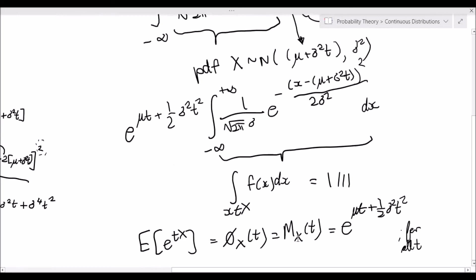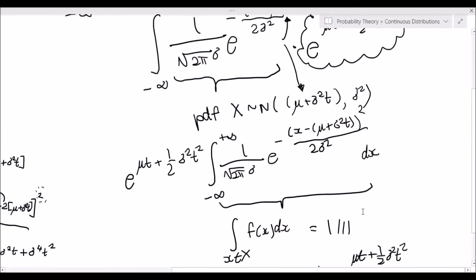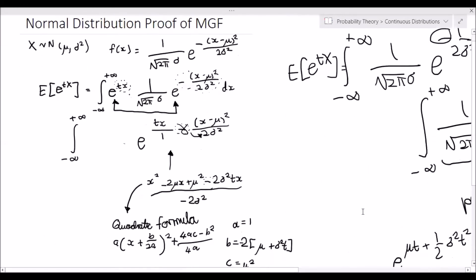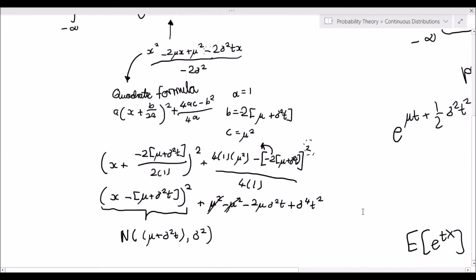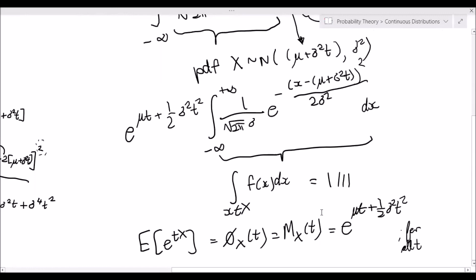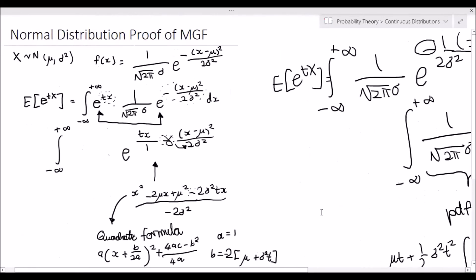Since we can bring the constants outside the integral, the expected value of e to the tx — the moment generating function for a normally distributed random variable X — is e to the mu t plus one half sigma squared t squared. I hope this has helped. I recommend you take a piece of paper, sit down, and practice it yourself, because learning is not just by watching but also by doing. Thank you for watching.